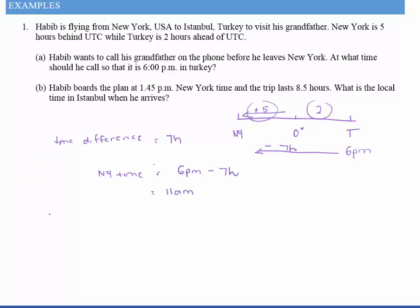For part b, Habib boards a plane at 1:45 New York time and the trip lasts eight and a half hours. What is the local time in Istanbul when he arrives? One way to think about this is to find the arrival time in New York time first. He gets on the plane at 1:45 p.m. and the trip is eight hours and five minutes, so if we add that on, what you get is 10:15 p.m. — that's New York time — and we need to convert that into Istanbul time.